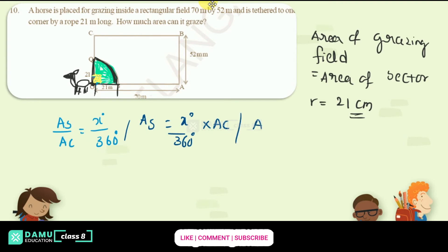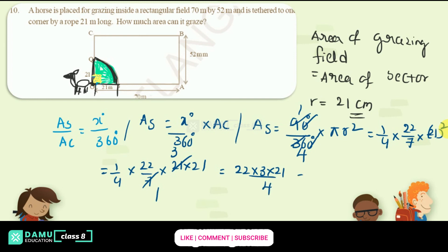Area of sector will be equal to x degree by 360 into area of circle. So then what you'll get here is area of sector will be x degree, which is 90 degree, by 360 into π r squared. So 90 by 360 is 1 by 4, then 22 by 7 into r is 21 whole square. So let's take 1 by 4 into 22 by 7 into 21 into 21.